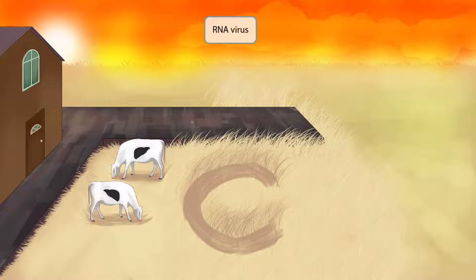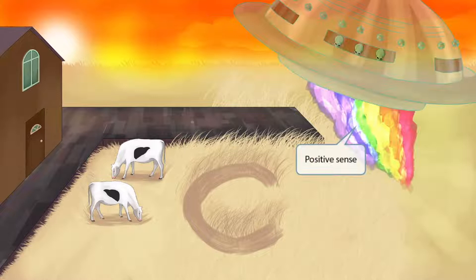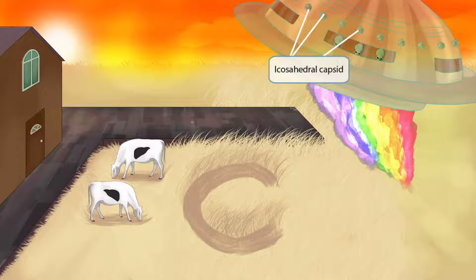Here is the spaceship the aliens use to travel to places to stomp out their crop circles. Notice that their engine releases a rainbow exhaust — these rainbow fumes indicate that hepatitis C is a positive sense virus. We like to think rainbows are positive, so positive rainbow for positive sense. The spaceship is well decorated with icosahedral items along the entire surface, indicating that hepatitis C has an icosahedral capsid.